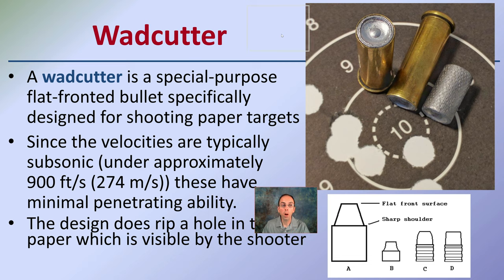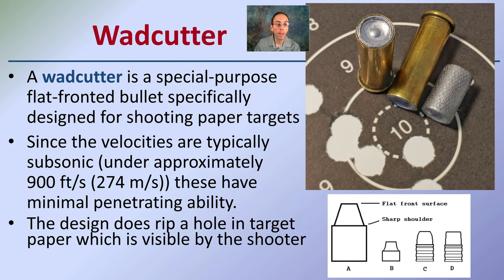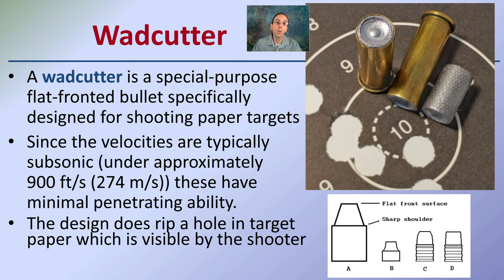Lastly, we have the wad cutter — a special purpose flat-fronted bullet specifically designed for shooting through paper targets. Since velocities are typically subsonic, under 900 feet per second, these have minimal penetrating ability. They're designed to rip a clean hole in target paper that's visible to the shooter from a long distance. Wad cutters are used for practice, allowing you to see the hole from a fair distance to help sight in your firearm and improve long-term accuracy.